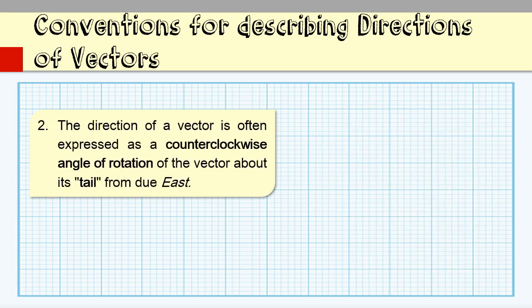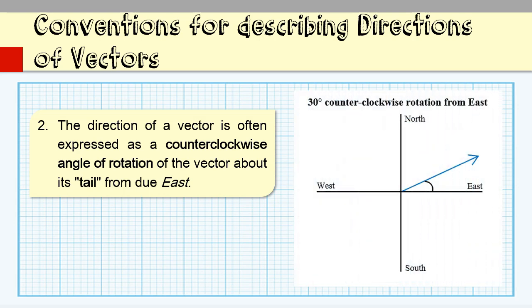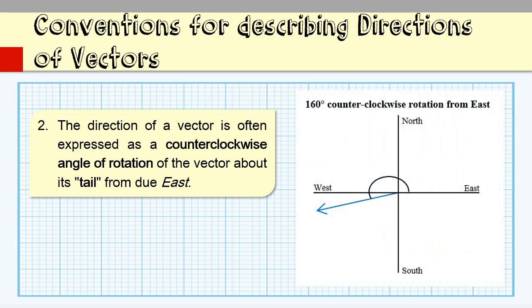Second, the direction of a vector is often expressed as a counterclockwise angle of rotation of the vector about its tail from due east. For example, a vector with a direction of 30 degrees is a vector that has been rotated 30 degrees in a counterclockwise direction relative to due east. Another example: a vector with a direction of 160 degrees is a vector that has been rotated 160 degrees in a counterclockwise direction relative to due east.